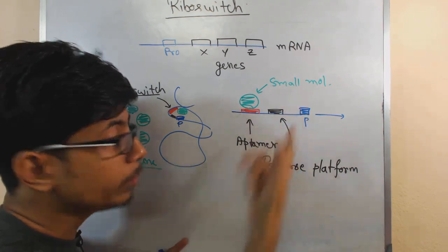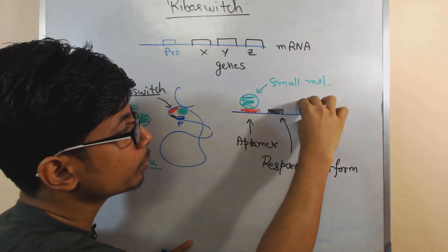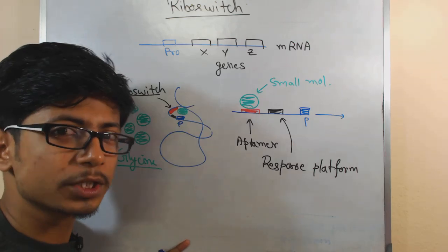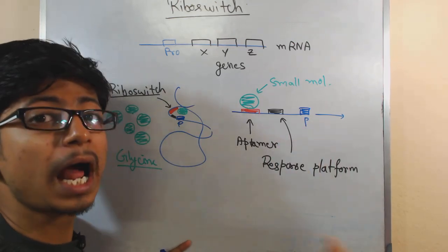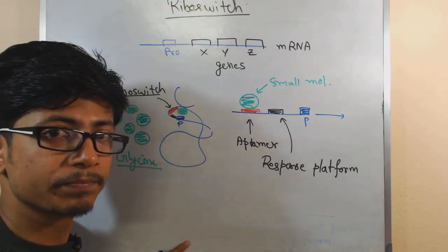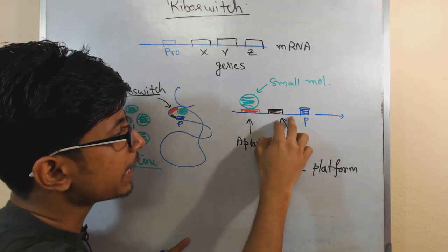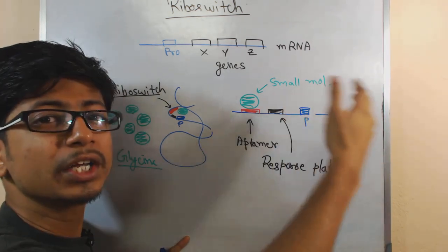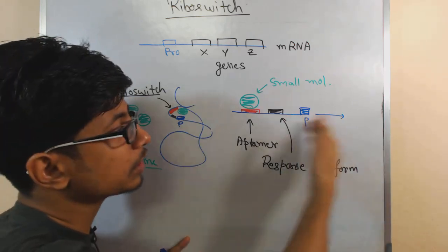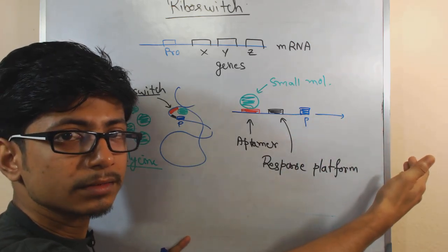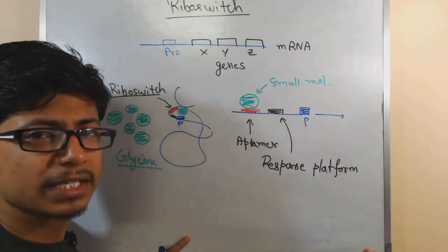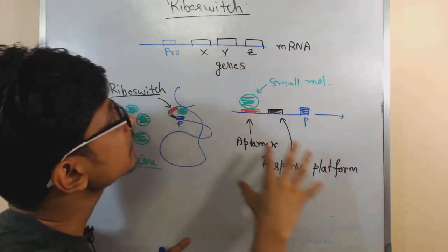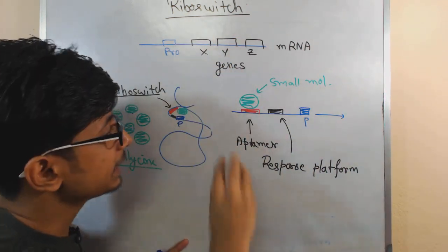The response element section slightly changes the secondary conformation of the mRNA that was present before. By doing so, it makes the promoter sometimes available for transcription and sometimes unavailable for transcription. Most of the time it makes the promoter unavailable, turning off all the downstream genes. In some cases it may turn on the promoter as well. This is the core functionality of the riboswitch.